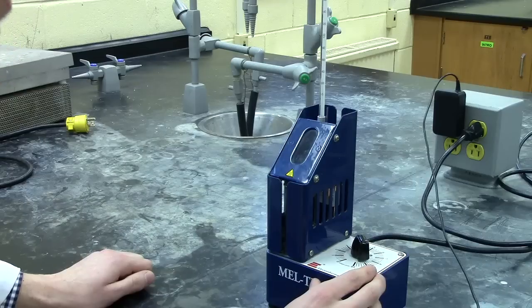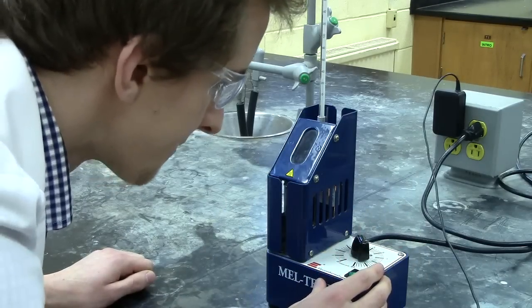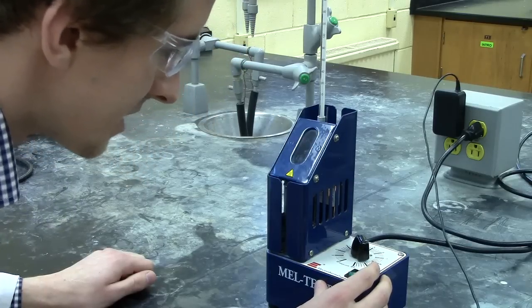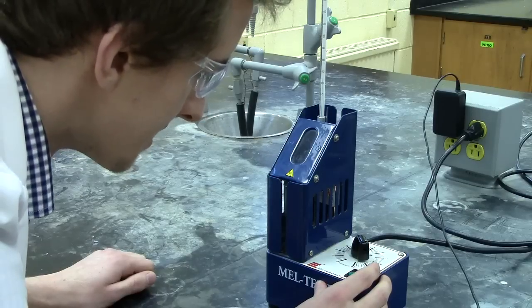Because you expect melt temperature to be within a range, you'll be looking for the first formation of a liquid as the first temperature that you record as your melt temperature range, and then the complete disappearance of a solid as the second temperature that you record within your range.